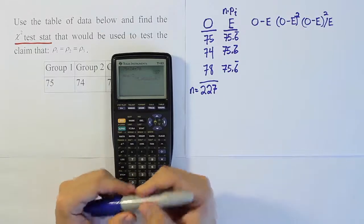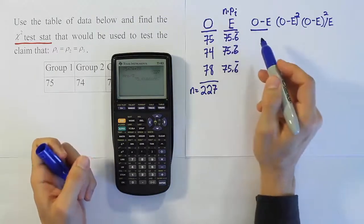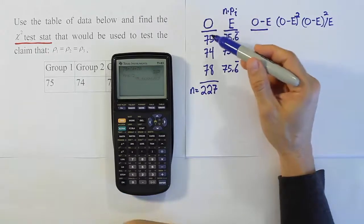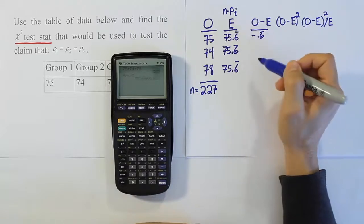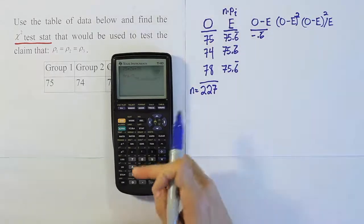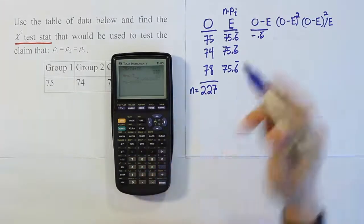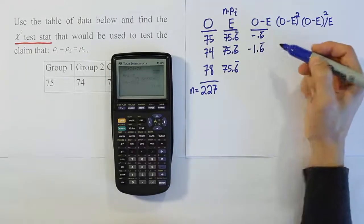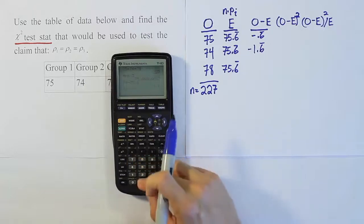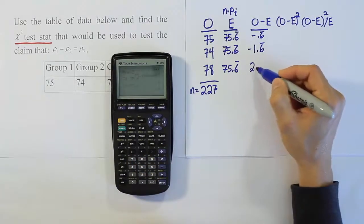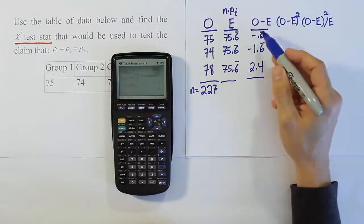Now our expectation is done. We're going to do observed minus expected. So observed minus expected means you're going to subtract these two and see what your difference is. For example, if you do it in that order, 75 minus 75.6, you get minus 0.6 repeating. So let's just go down and do all the rest the same. So 74 minus 75.6, you get negative 1.6 repeating, and then you do the same thing here. We'll have 78 minus 75.6, and 2.4 is going to be your answer for that. So there's your observed minus expected column.